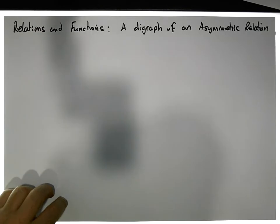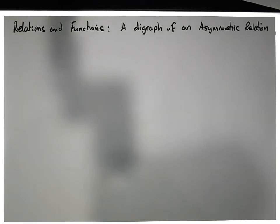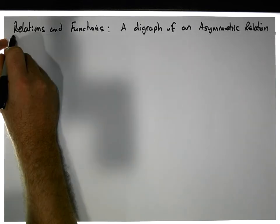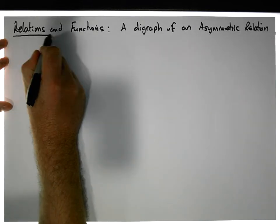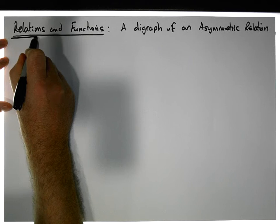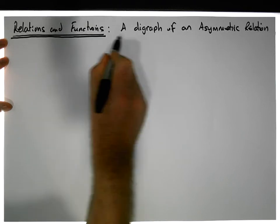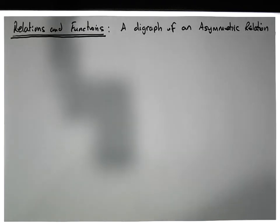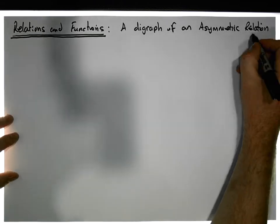Hi guys, this is Jonathan Lambert with the Mathematics Development and Support Service at the National College of Ireland. In this short video — another in our series dealing with relations and functions — we're going to consider what the digraph of an asymmetric relation looks like.